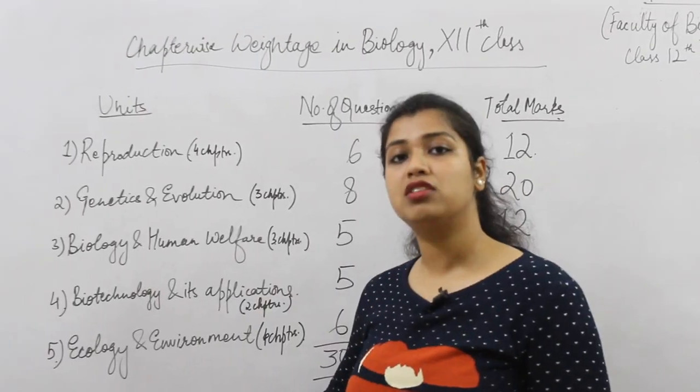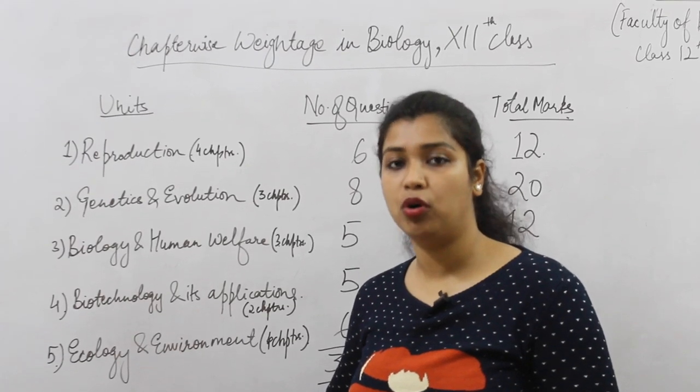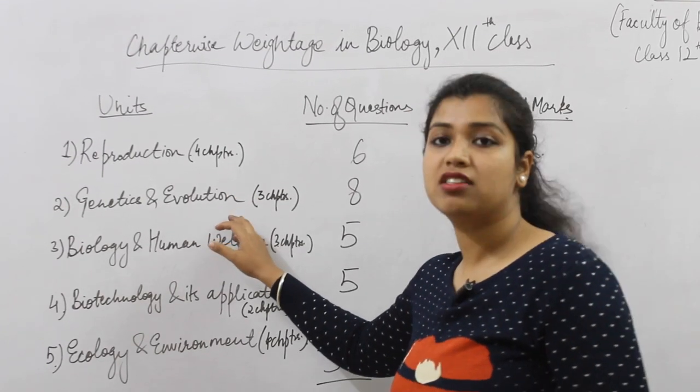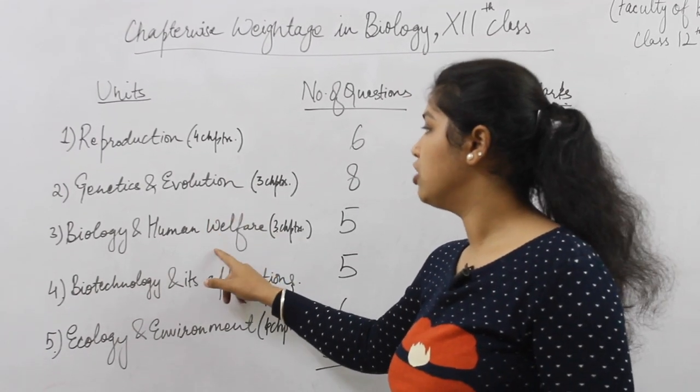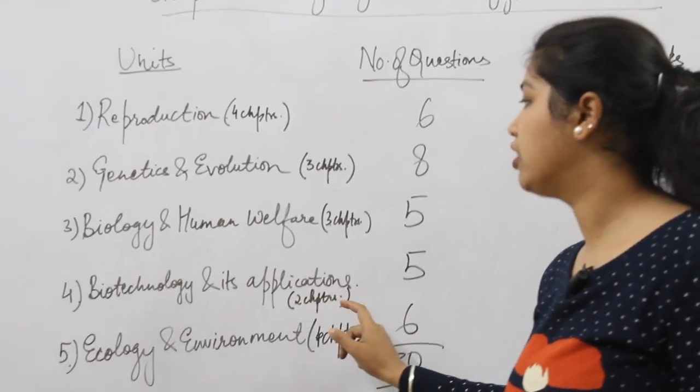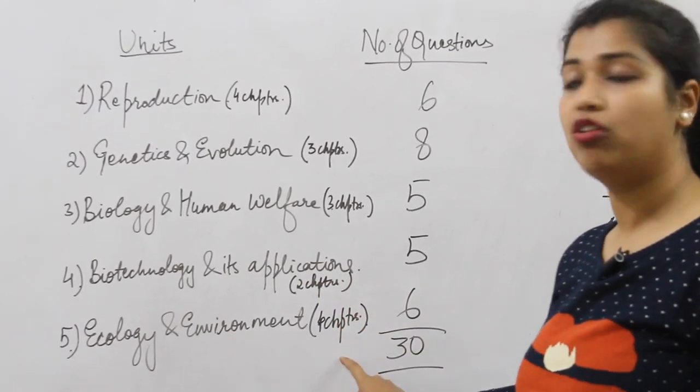I will be giving you an idea about the chapter-wise weightage in biology. There are five units in our NCERT book: reproduction, genetics and evolution, biology and human welfare, biotechnology and its applications, and ecology and environment.